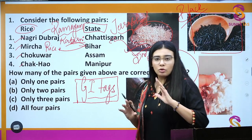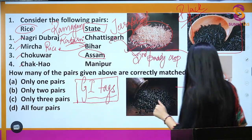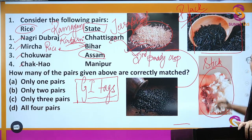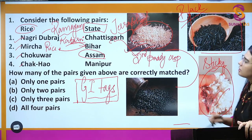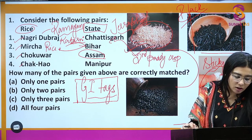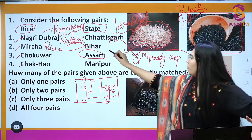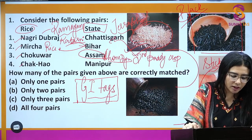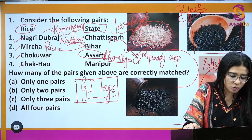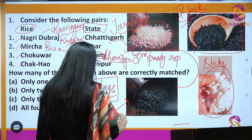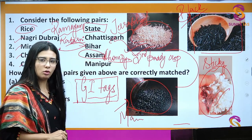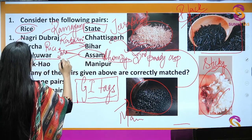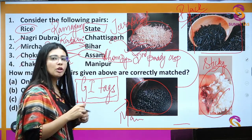The third rice is Chokuwar, which belongs to Assam. It is a sticky rice, as you can see from the image. It also has a connection to the Ahom dynasty. Next is Chakhao, which belongs to Manipur. It is black in color but non-sticky, unlike Chokuwar. Assam also has two more rice varieties with GI tags: Joha and Boka rice.